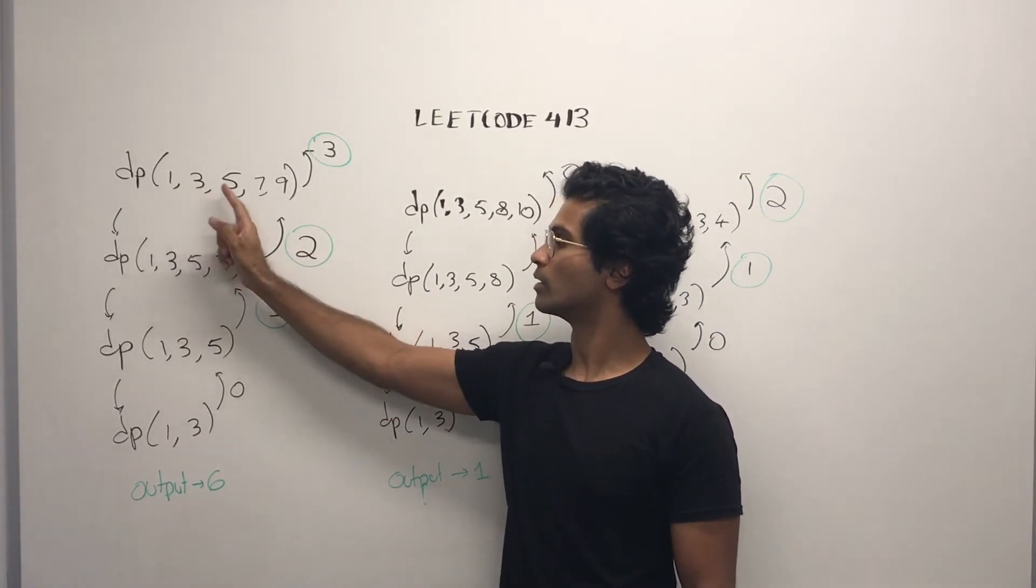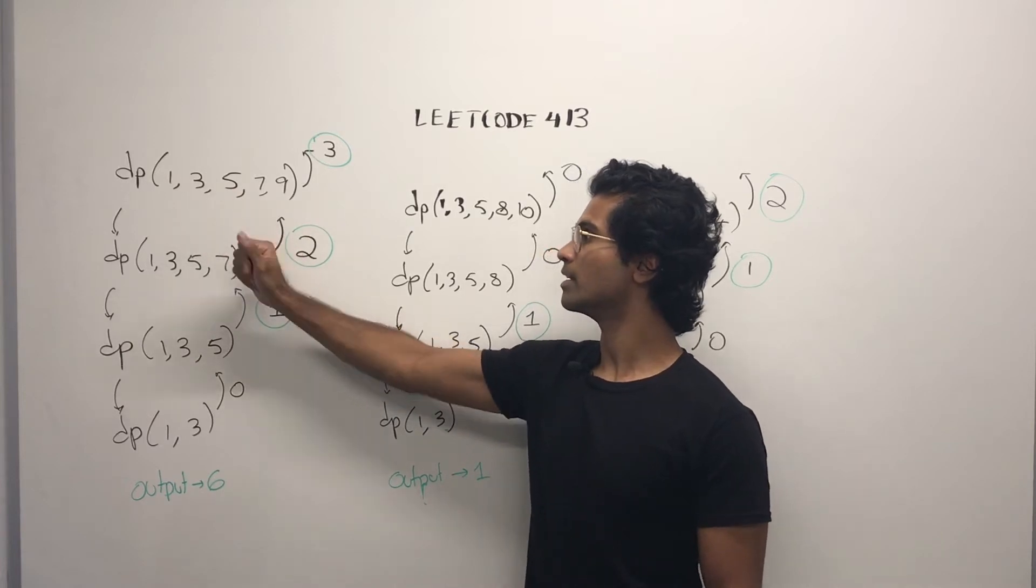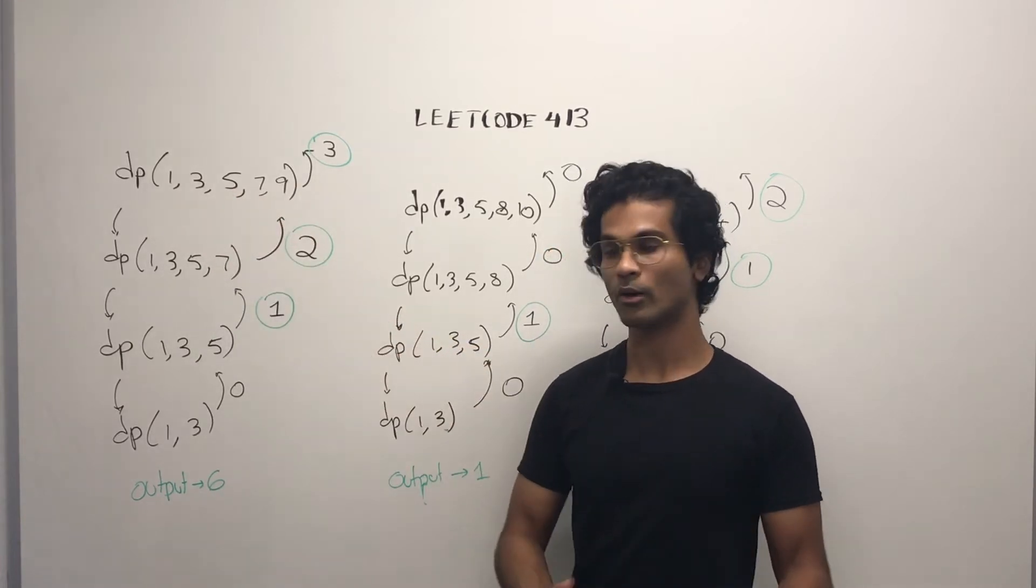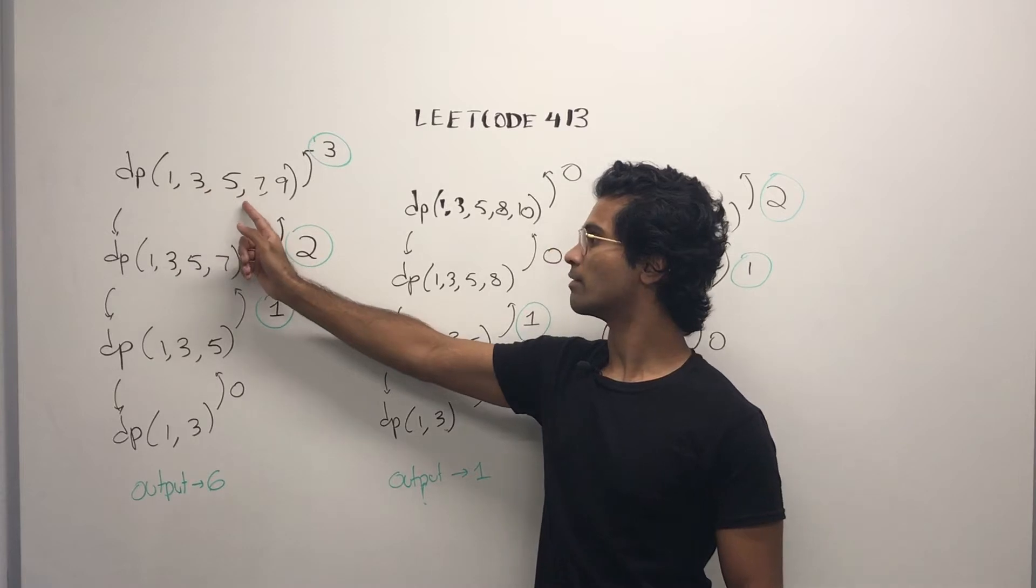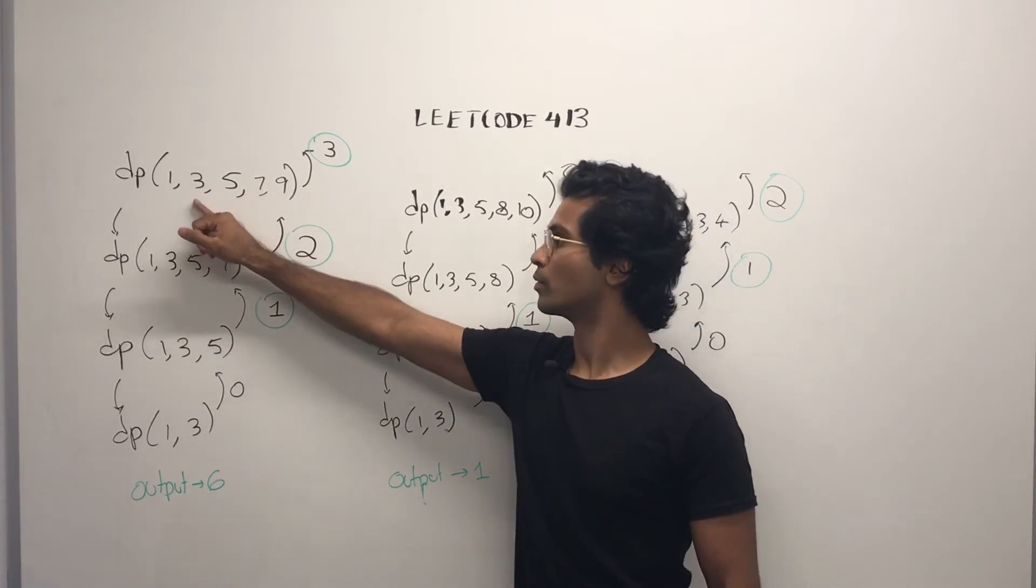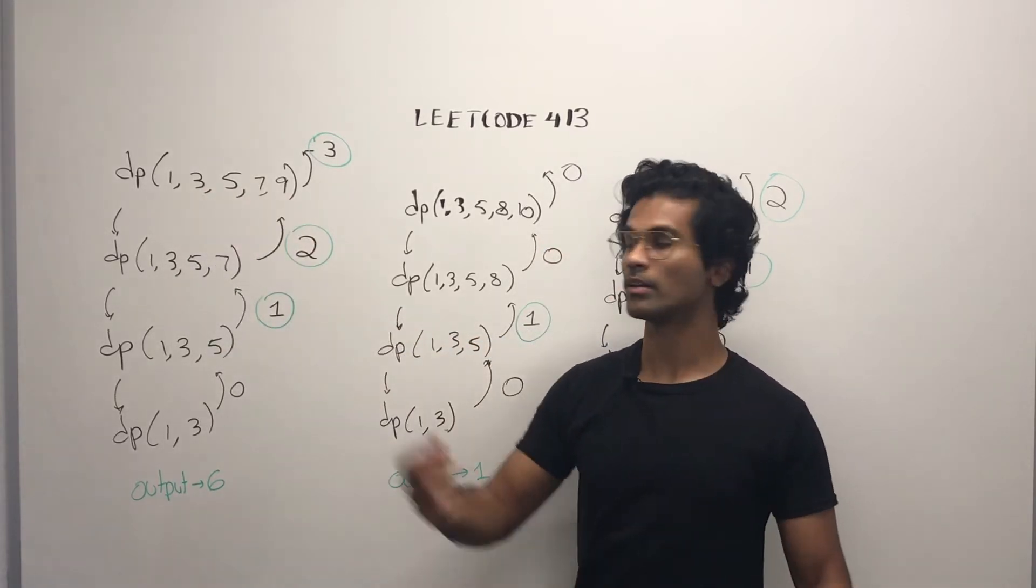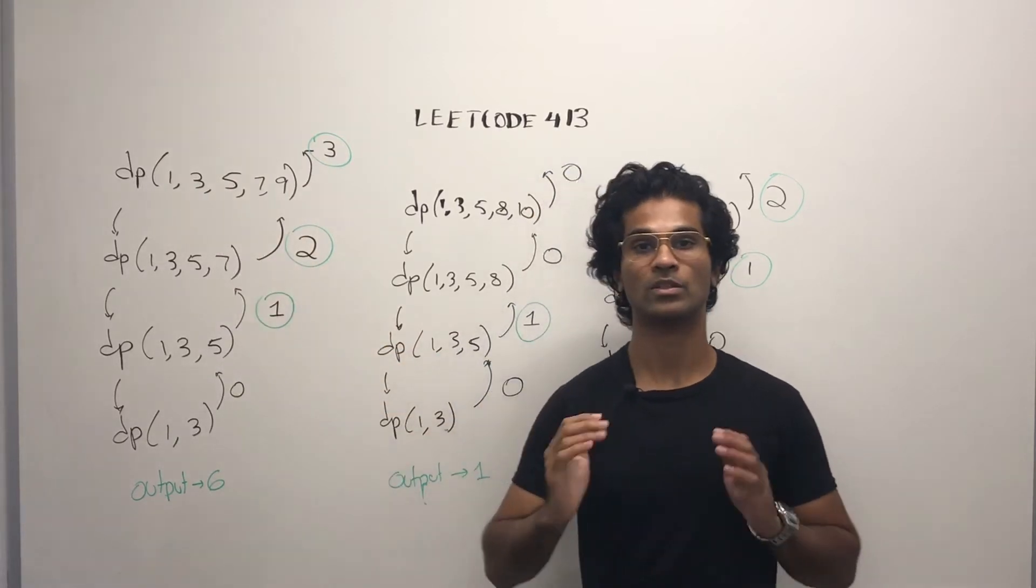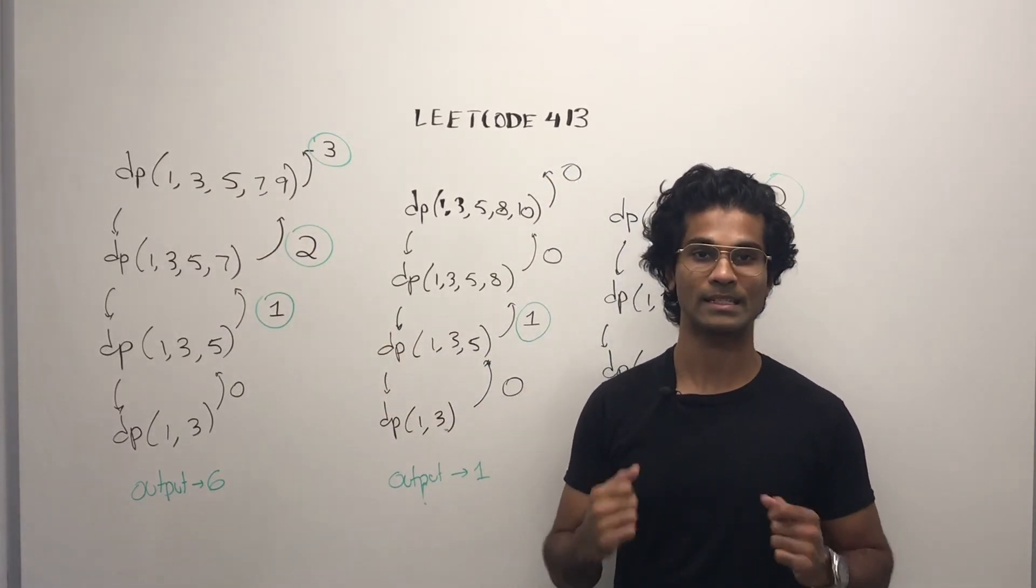When we go here, we see that 1, 3, 5, then 3, 5, 7, and 5, 7, 9. We also have 1, 3, 5, 7. We also have 3, 5, 7, 9. And finally, we have the whole thing, 1, 3, 5, 7, 9. These are all valid arithmetic slices.